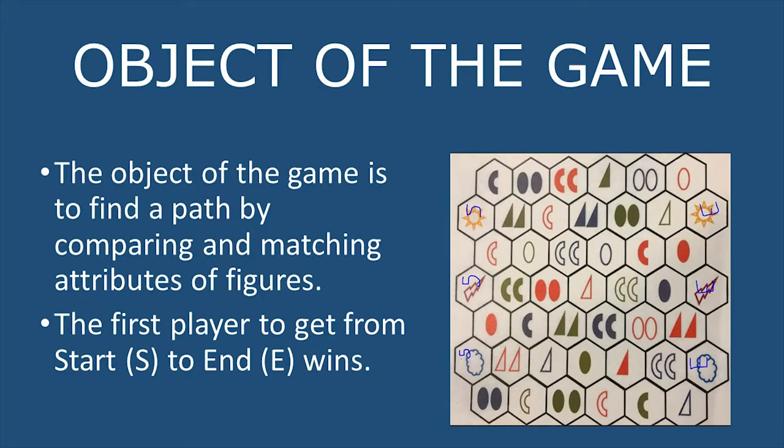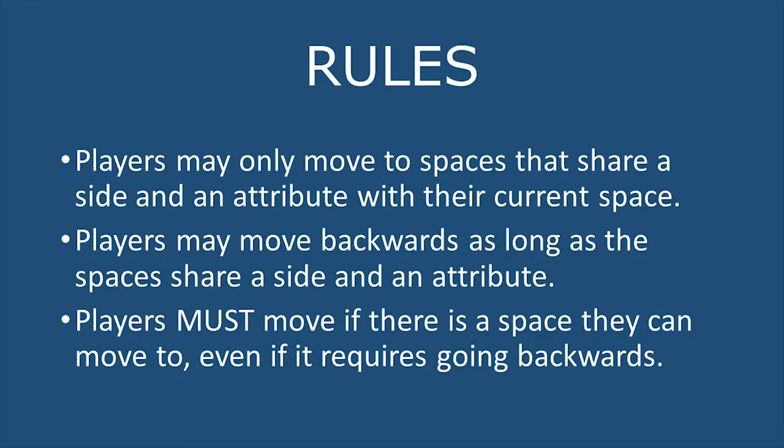The object of this game is to plan a path by comparing and matching attributes of figures. When playing the game, players must only move to spaces that share a side with their current space. A player may move backwards as long as the spaces share a side and an attribute. Players must move if there is a space they can move to, even if it is going backwards.